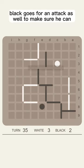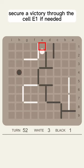Black goes for an attack as well to make sure he can secure a victory through cell E1 if needed.